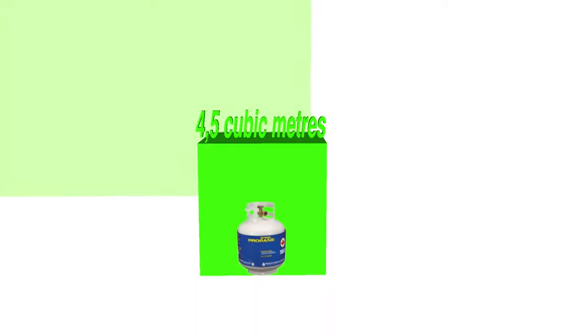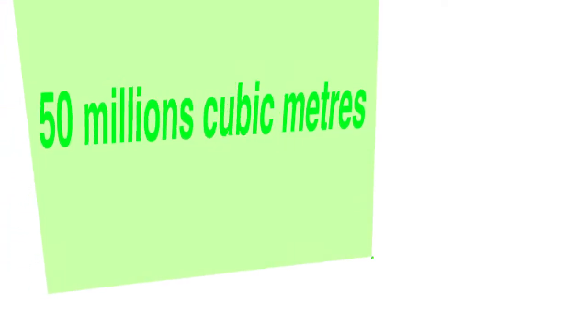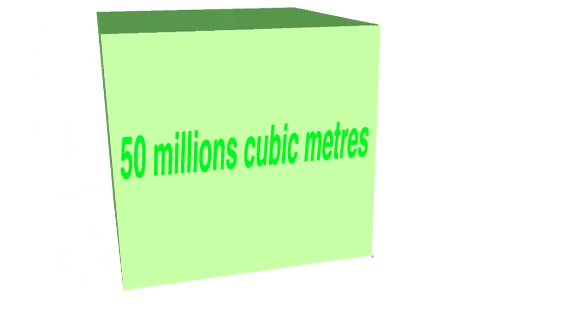A gas tank which contains 80 percent of its maximum capacity is about four cubic meters. On the other hand an abandoned drilling site still containing 80 percent of its methane is more than 50 million cubic meters.